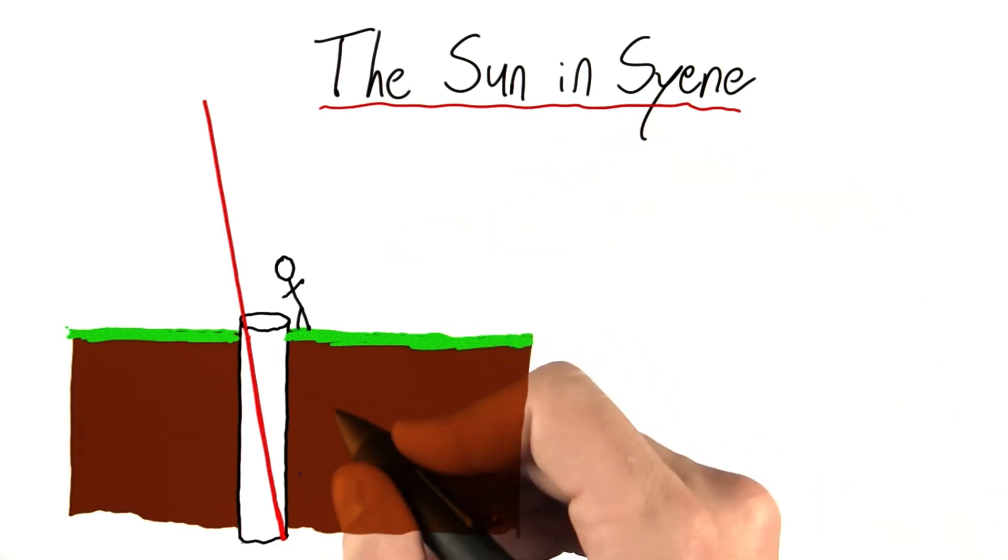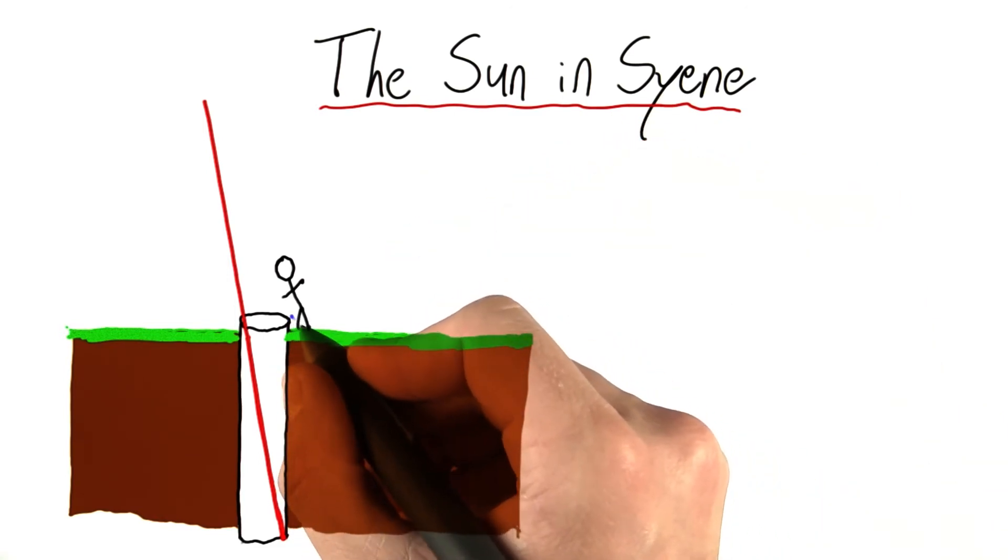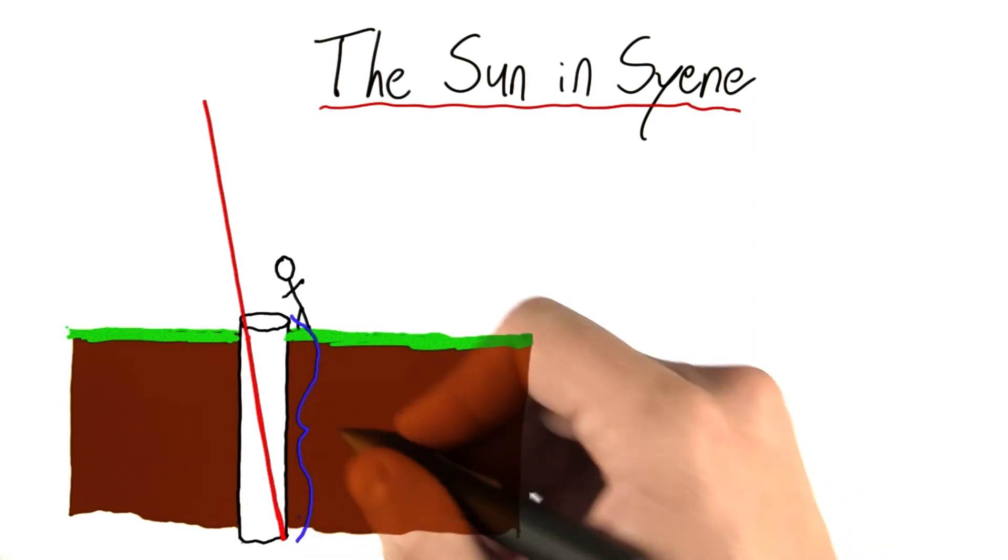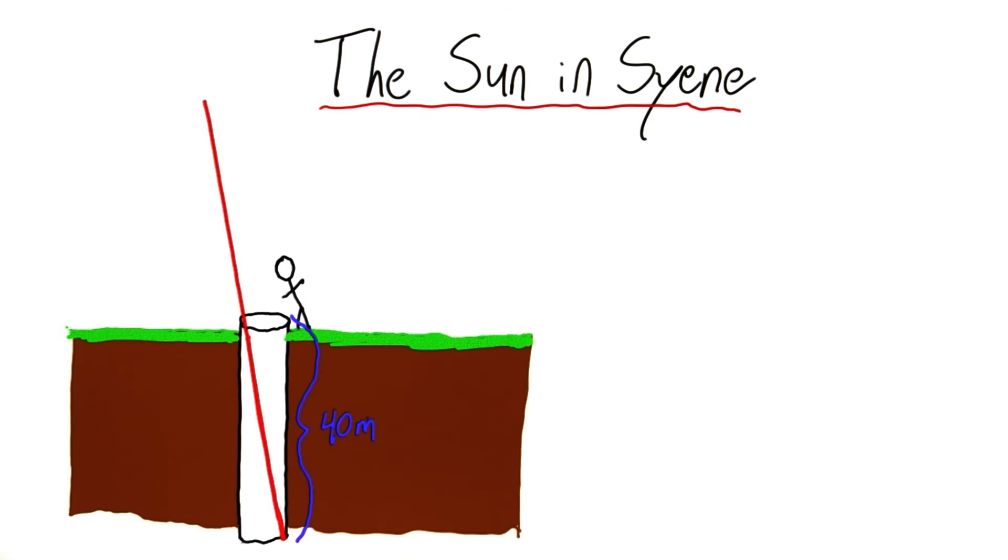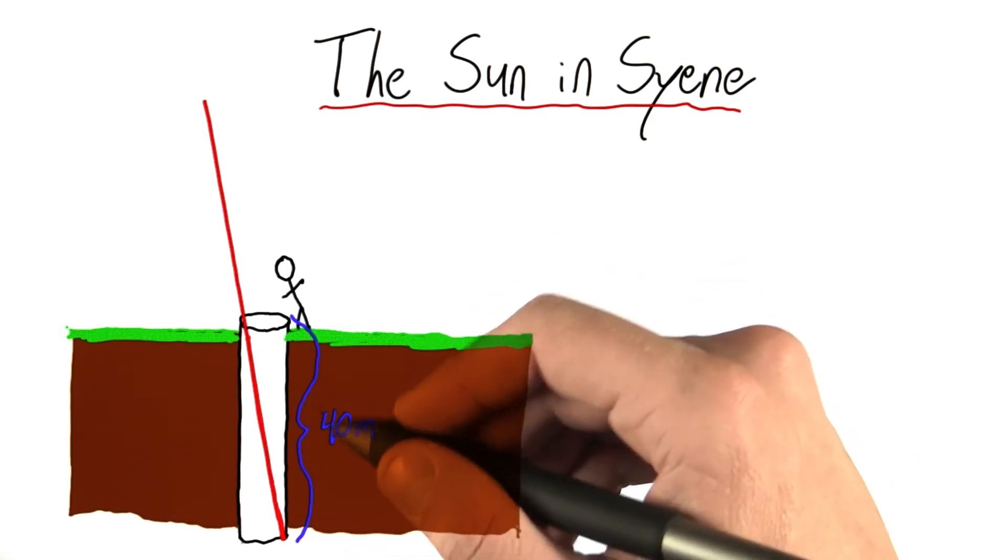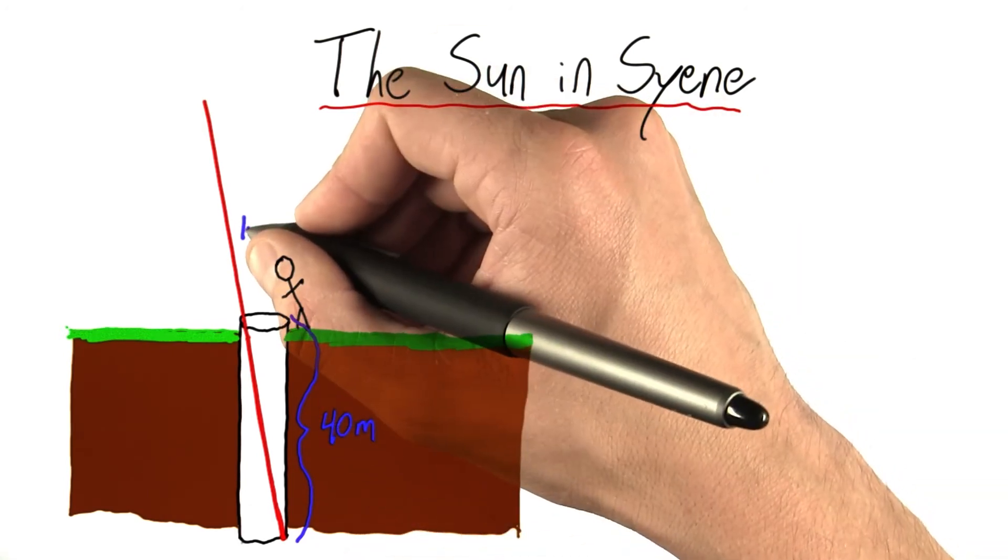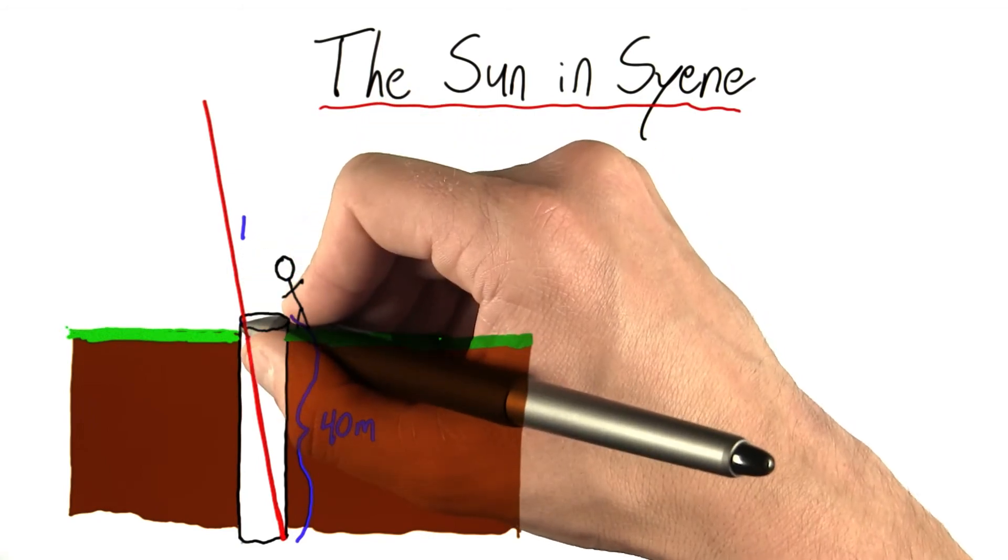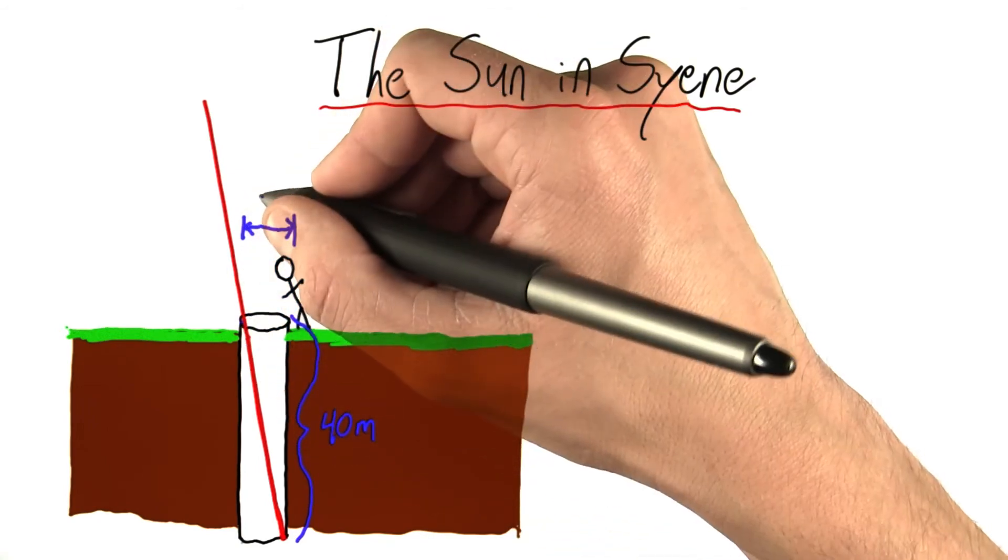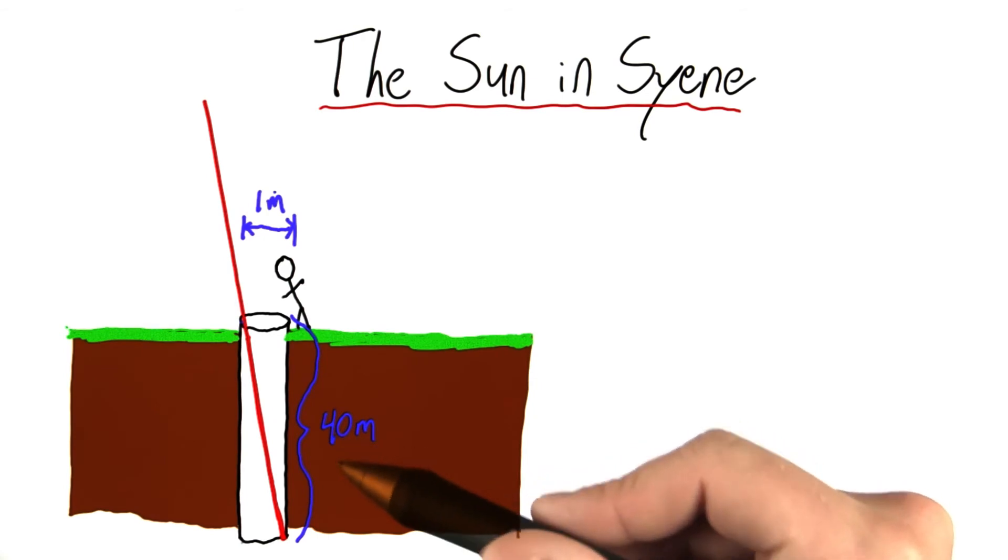I'm no well expert, but I'm going to assume that this well had a depth of 40 meters. Those of you who know more about wells than I do can tell me if this is a reasonable depth for a well. I'm going to assume that the width of the well, so from this edge to this edge, was about 1 meter. We have the dimensions of our well.